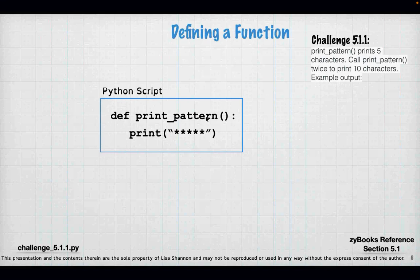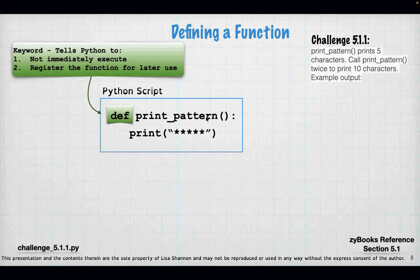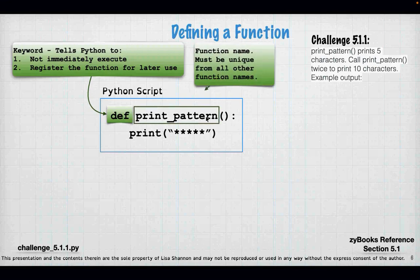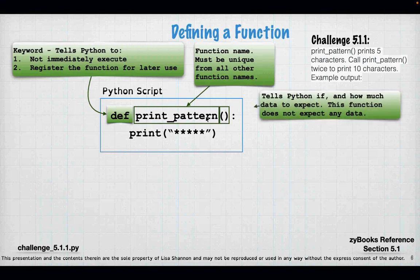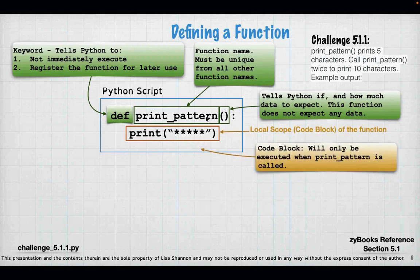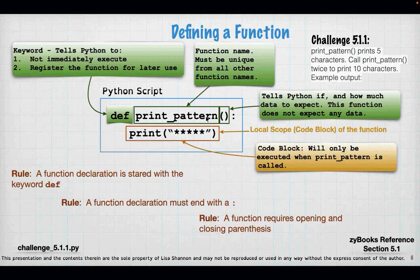Here is how you define a function — this is challenge 5.11. def is a keyword that tells Python: one, don't immediately execute the stuff under this function definition, and two, register this function for later. Which means it's going to take this group of code, store it, and not execute it. A function name must be unique to all other function names in your code. In this case our function name is print_pattern. A function name is very much like a variable name — it follows most of the same rules.